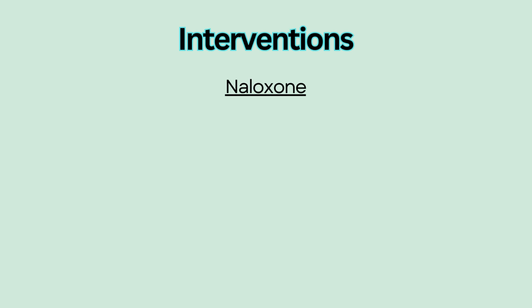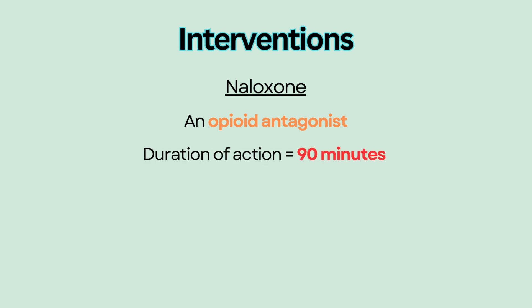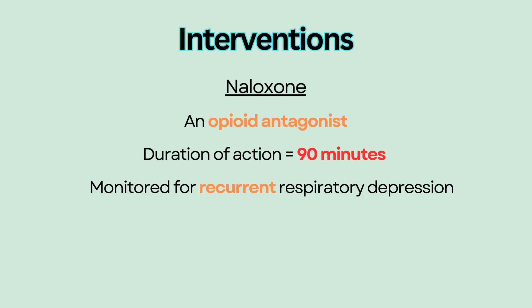Naloxone is an opioid antagonist that reverses the effect of opioid overdose. The duration of action is approximately 90 minutes, while most opioids remain in effect for 3 to 4 hours in the body. Therefore, patients should be monitored for recurrent respiratory depression, and repeat doses may be needed.